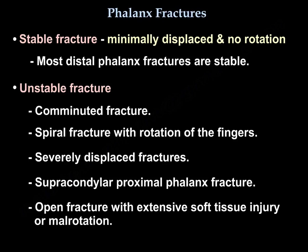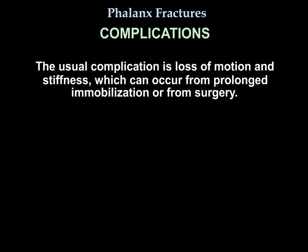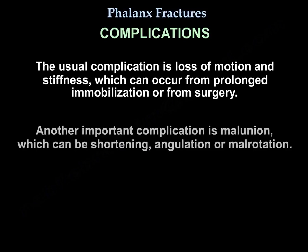Unstable fractures include comminuted or spiral fractures with rotation, severely displaced fractures, supracondylar proximal phalanx fractures, open fractures with extensive soft tissue injury, or mal-rotation. The usual complication is loss of motion and stiffness, which can occur from prolonged immobilization or from surgery. Another important complication is malunion, which can present as shortening, angulation, or mal-rotation.